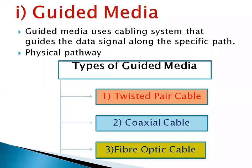Guided Media uses a cabling system that guides the data signals along a specific path. In other words, it is a physical path over which the data travels. There are three types of guided media: twisted pair cable, coaxial cable, and fiber optic cable.